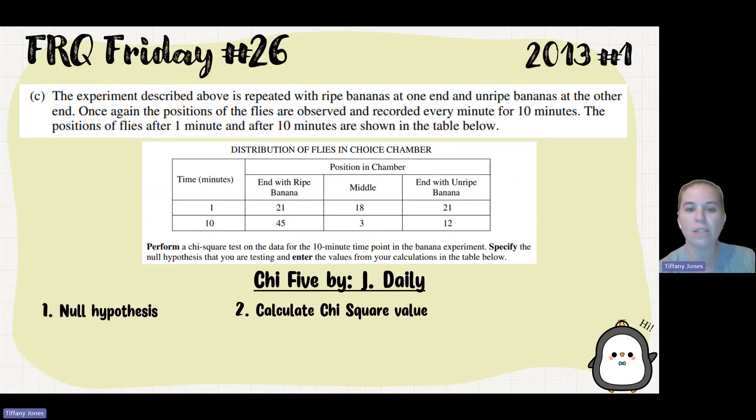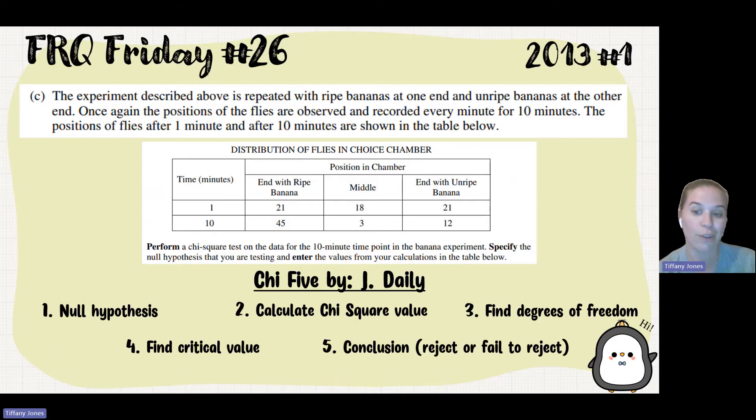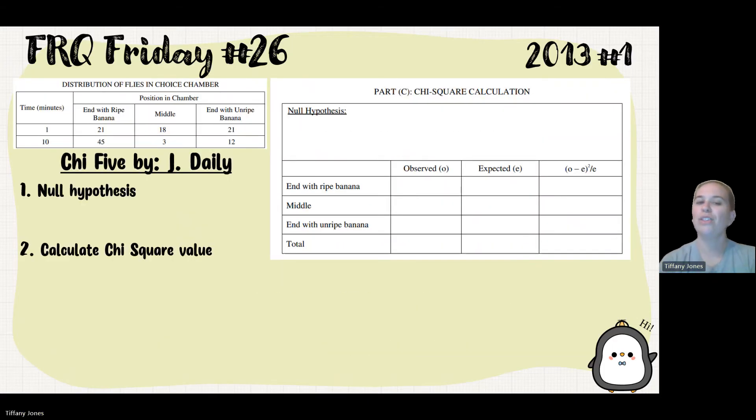First we'll talk about null hypothesis, we'll calculate our chi-square value, we'll find our degrees of freedom, our critical value, and then we'll come up with our conclusion, which will be rejecting or failing to reject that null.